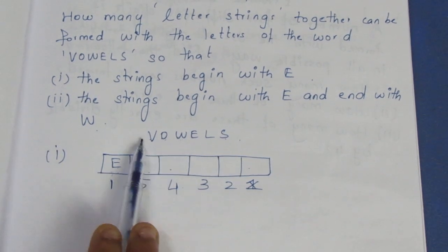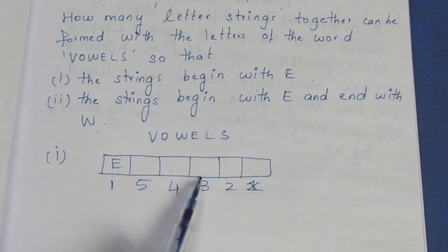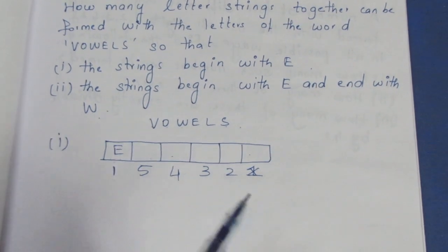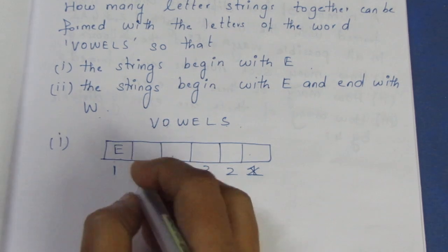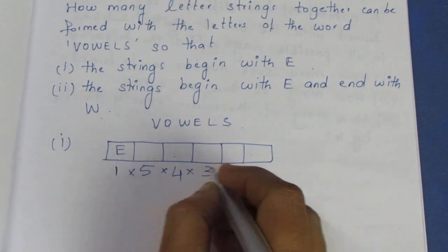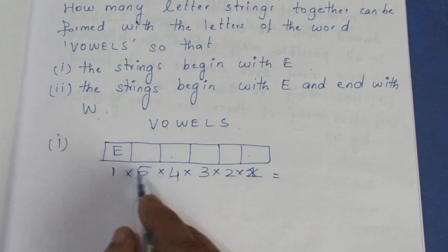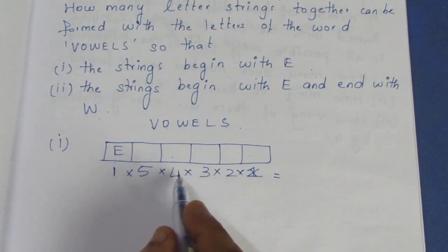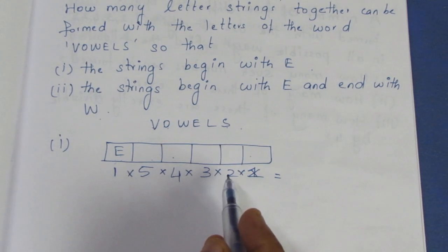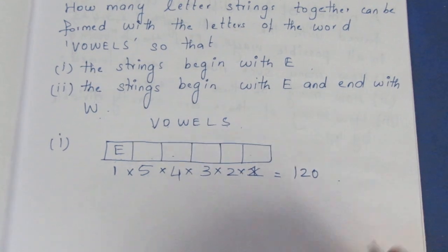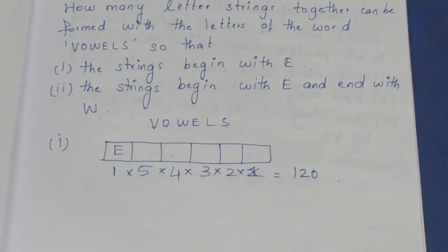Continuing, the fifth box can be filled with 2 letters and the last with 1. Now multiplying: 5 × 4 = 20, 20 × 3 = 60, 60 × 2 = 120. So in total, 120 words can be formed for the first condition.